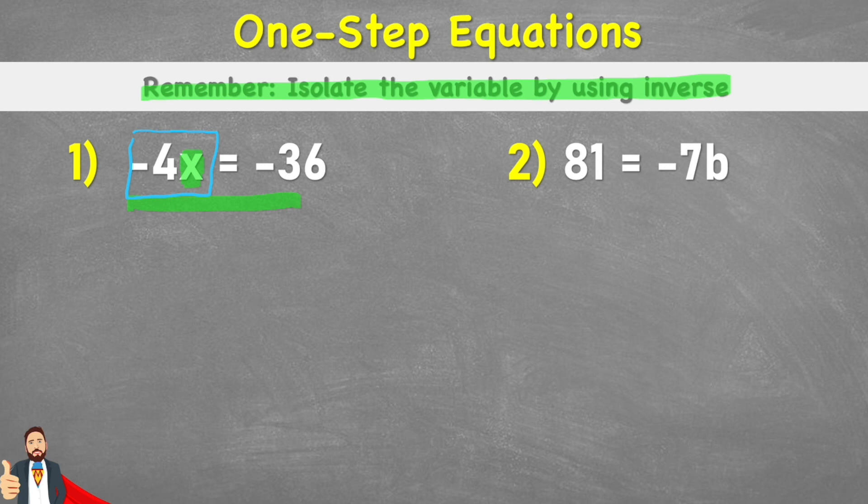But like we say, our variable at the moment is connected to this value. So we need to break that connection somehow. And the only way we can break this connection is by using the inverse. So like we said, our negative 4 times x at the moment is using multiplication. So what's the inverse of multiplication? Division.